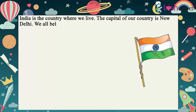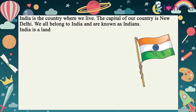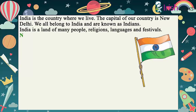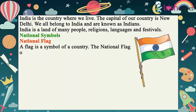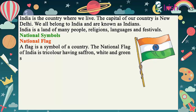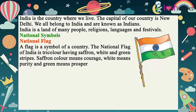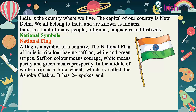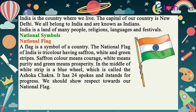National symbols. National flag. A flag is a symbol of a country. The national flag of India is tricolor, having saffron, white and green stripes. Saffron color means courage, white means purity and green means prosperity. In the middle of the white strip is a blue wheel which is called the Ashoka Chakra. It has 24 spokes and it stands for progress. We should show respect towards our national flag.